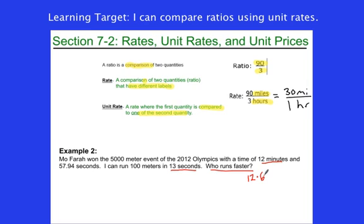So just one thing we are going to have to do here. Notice he runs in minutes and I run in seconds. We're going to have to convert his time into all seconds. It's very easy. Maybe 12 minutes is 720 seconds. I'll add that 57.94 on here.